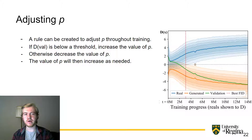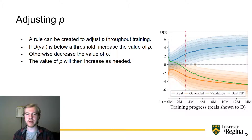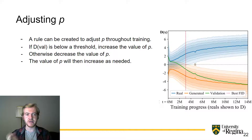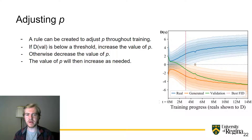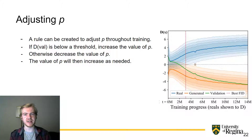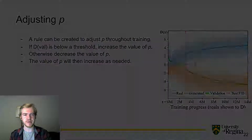We can create a rule which will adjust the value of P over the training time. If the value of the discriminator on this validation set is below some certain threshold, increase the value of P; otherwise decrease the value of P. The value of P will then increase as needed as the discriminator overfits the data set.